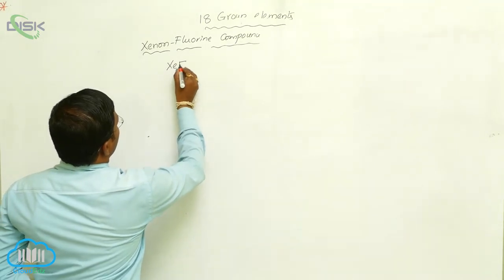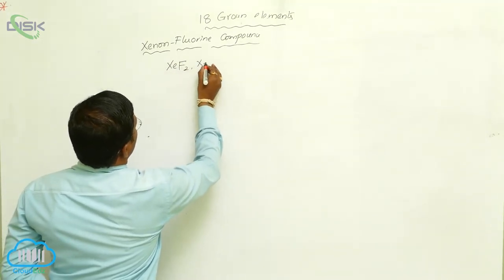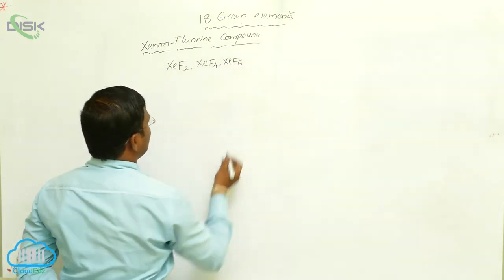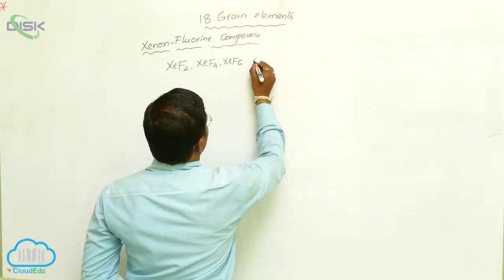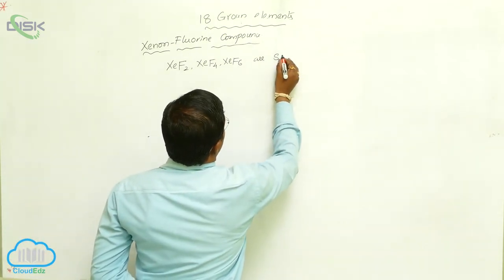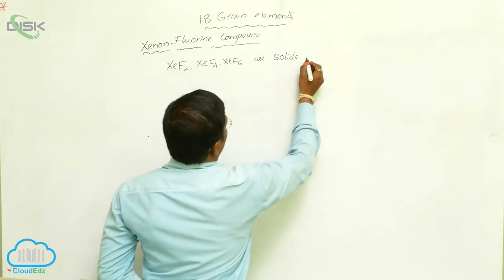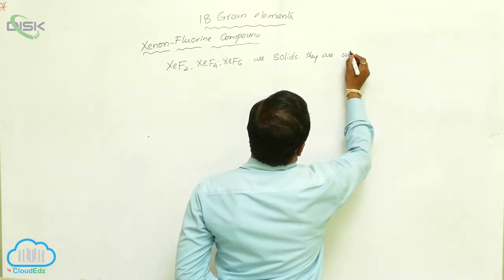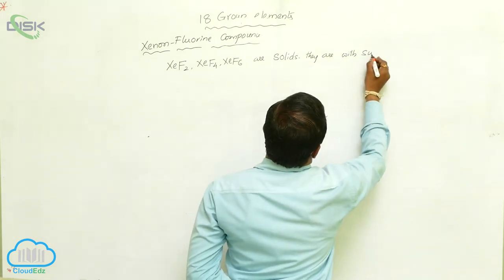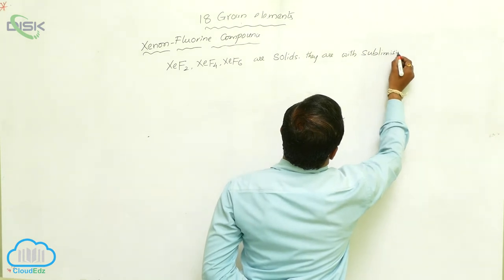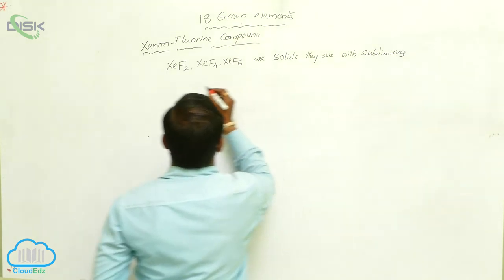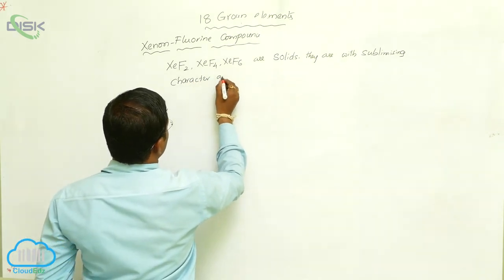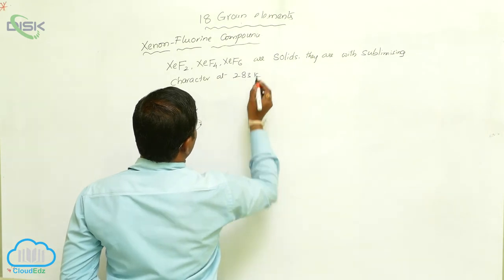Here xenon difluoride, xenon tetrafluoride, and xenon hexafluoride resulting from xenon by reaction with fluorine are colorless solids. They have sublimizing character at 283 degrees Kelvin.